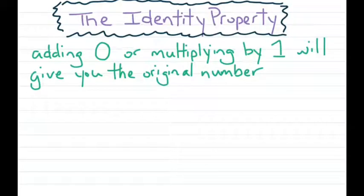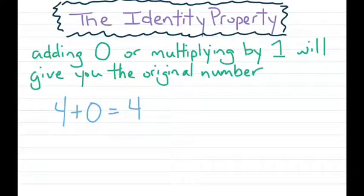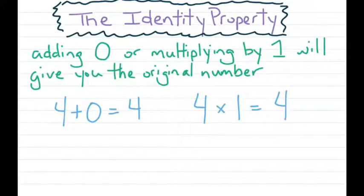Next up is a pretty easy property called the identity property. The whole goal is to get the same answer. If you add 0 to something or multiply something by 1, you're going to get the original value you started with. This also technically works with subtracting 0 or dividing by 1, but typically we associate it with addition and multiplication. For example, 4 plus 0 is still 4 — that 0 does not affect the 4 at all. And 4 times 1 is still 4. It does not change your original answer in either case.